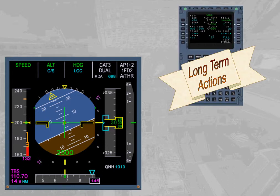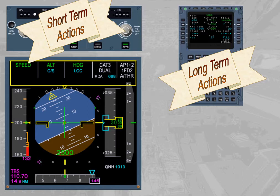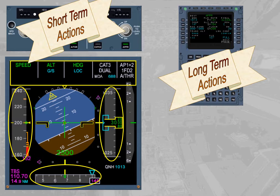Long-term actions through the MCDU and short-term actions through the FCU must be cross-checked on the flight mode enunciator FMA, located at the top of the PFD, as well as on the various scales of the PFD. The guidance mode engagement, arm status, and their associated guidance targets are provided on the FMA and PFD scales: speed, heading, altitude. When managed by the FMGS, the targets and modes are displayed on the FMA as the flight progresses.